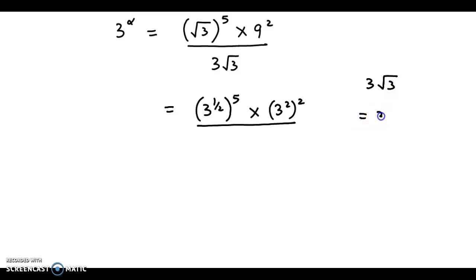This could be written as 3 times 3 raised to half. So here basically the power is 1 and if we add the 2, we have 3 raised to 1 plus half. Now 1 plus half gives us 3 by 2.